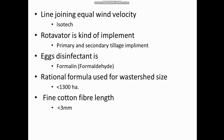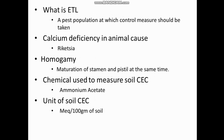Fine cotton fiber length is less than 3 mm. ETL - Economic Threshold Level - is a pest population at which control measures should be taken. Calcium deficiency in animals causes rickettsia disease. Homogamy means maturation of anther and stigma at the same time, or maturation of stamina and pistil at the same time. Chemical used to measure soil CEC is ammonium acetate; the unit of soil CEC is meq per 100 gram of soil.